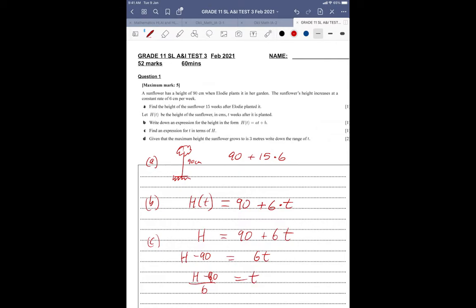given that the maximum height the sunflower grows to is 3 meters. I had to take a deep breath when I was marking some of your work here. Of course, 3 meters. But notice that H of T is the height of the sunflower in centimeters. So we can only use centimeter measurements. And as everyone knows, right, 3 meters is 3,000 centimeters.